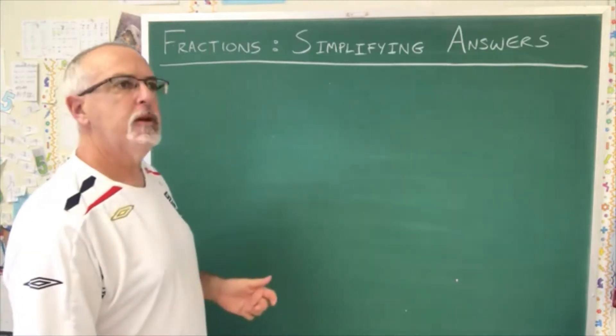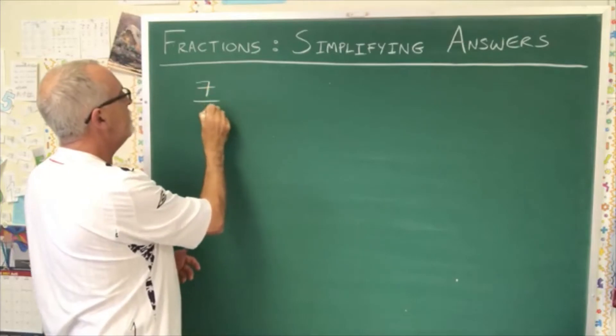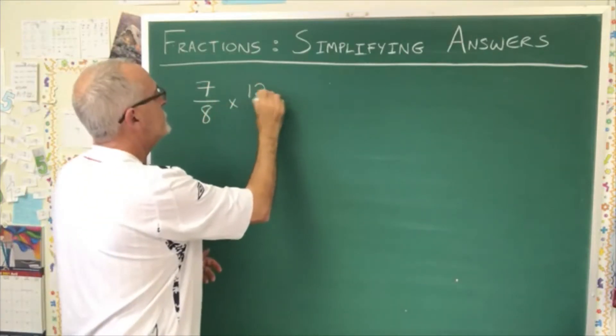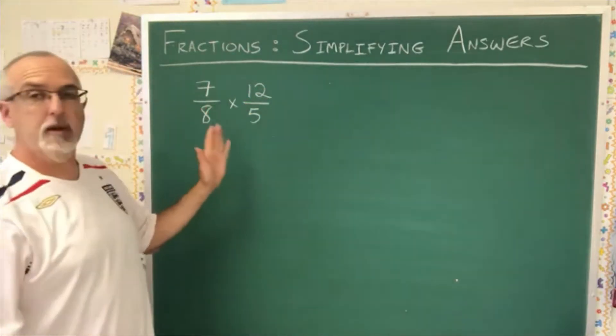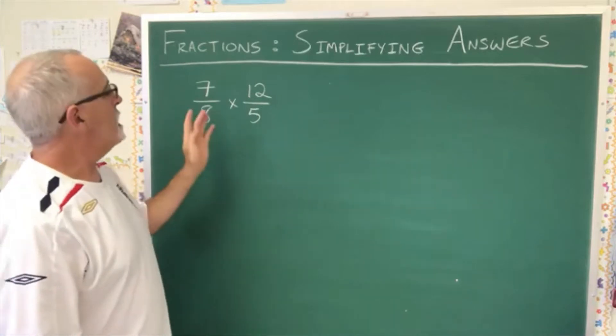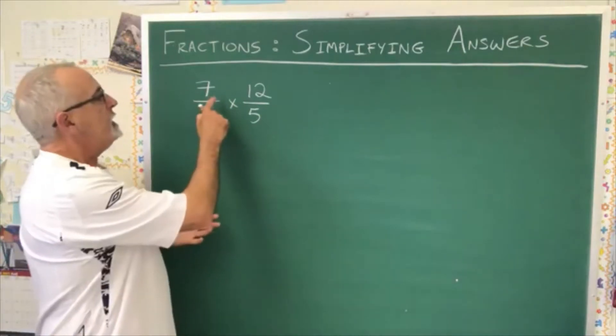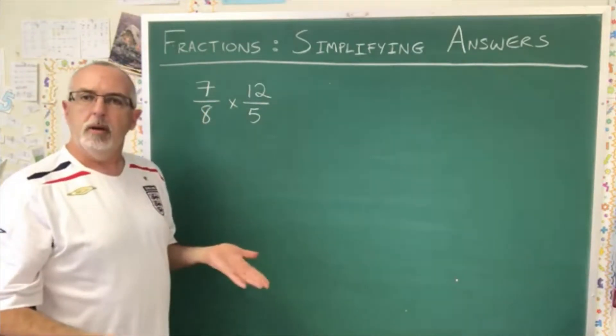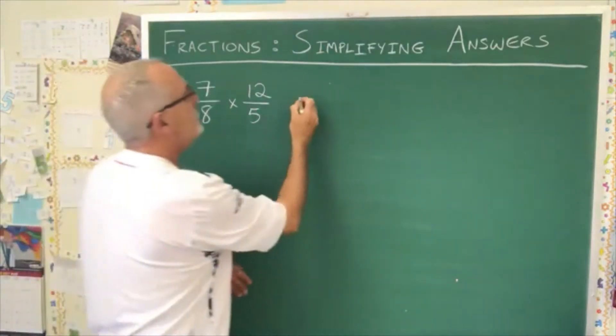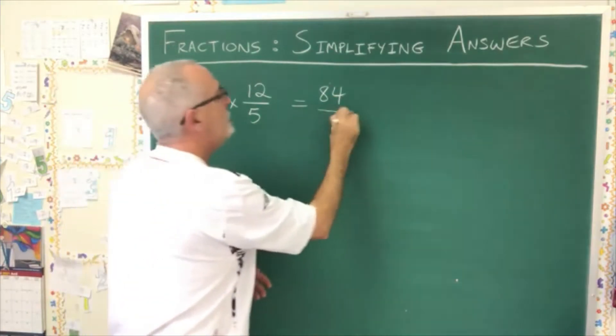An example I'm going to use is just this little multiplication: 7 eighths times 12 fifths. Now we could do cancelling to start simplifying this now but I'm not going to do it. I'm going to go straight into my multiplication because that's what most of my students would prefer to do. Multiplying is an easy one: top times top gives new top, bottom times bottom gives new bottom. 7 times 12 gives 84. 8 times 5 gives 40.